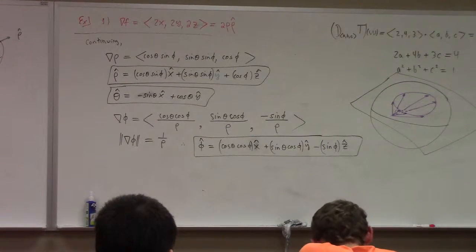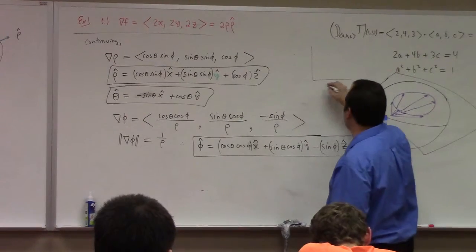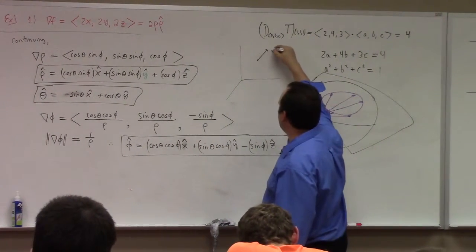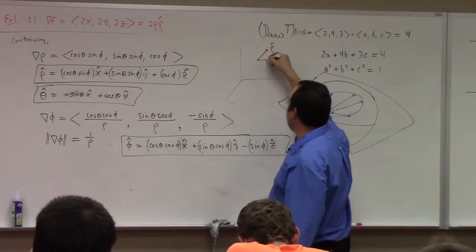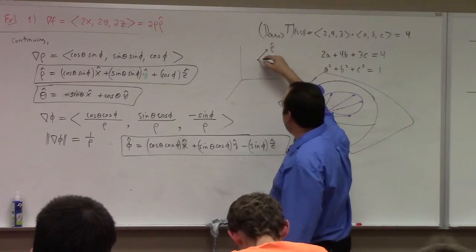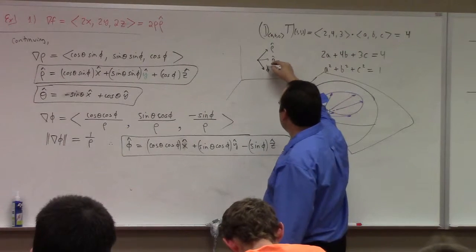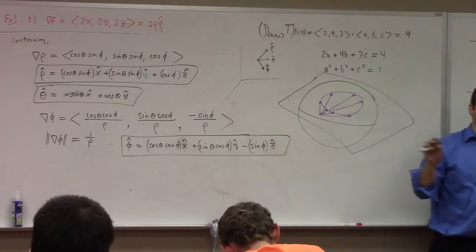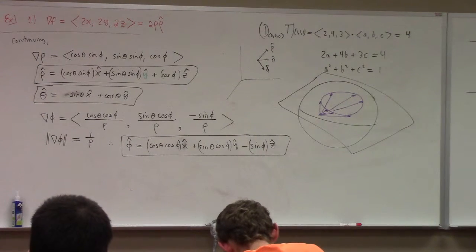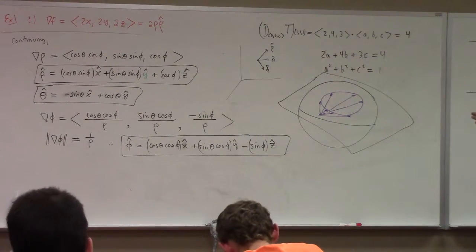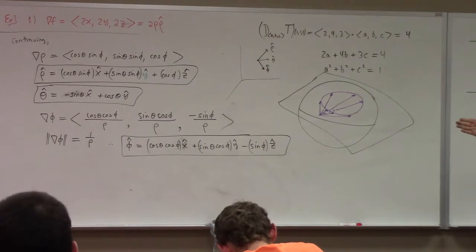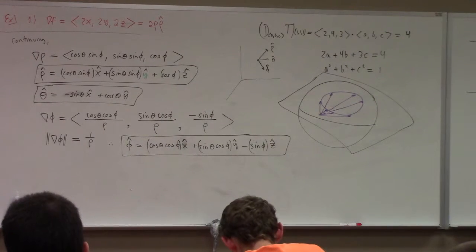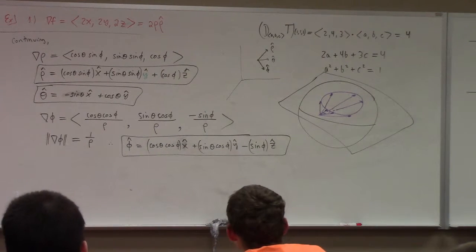And of course, you could try to understand this geometrically. You could try to draw a picture and take a point out here, and I know that rho hat points out like that, and I know that theta hat points in the direction of increasing theta, and I know that phi hat points down. And if you're a really good artist, you probably could start to see some of these formulas from such a picture. But I just kind of like the fact that we can just work it out by differentiating and normalizing and having an understanding of what the gradient vector means as it applies to level functions.